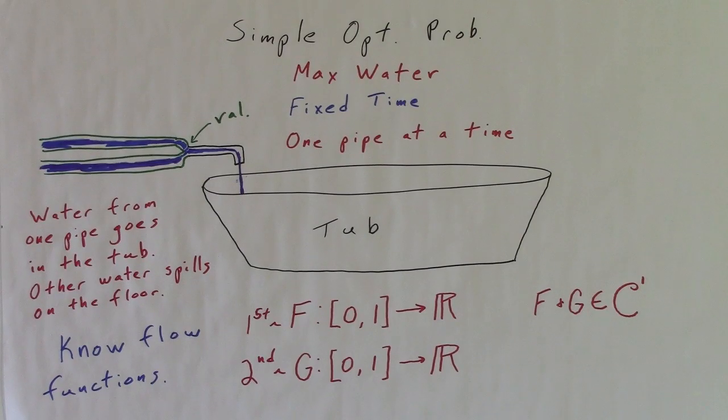Let's start with this analogous optimization problem. We have a fixed amount of time to maximize the amount of water in the tub. This faucet has a switch valve that is connected with these two pipes. If the water from one pipe goes in the tub, then the water from the other pipe gets wasted.